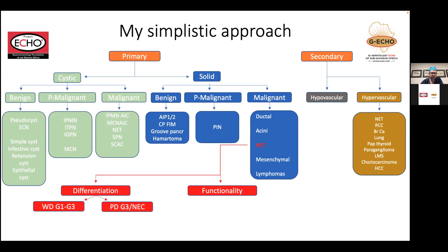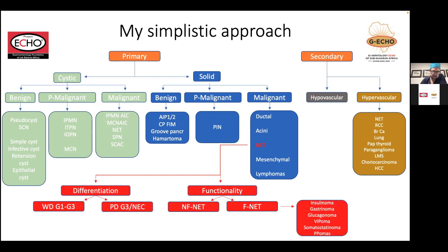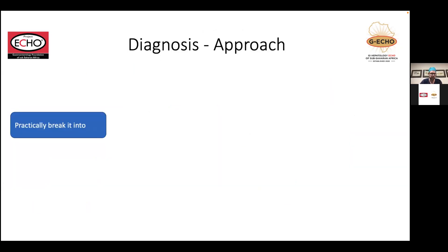The neuroendocrine tumor component can be further classified based on differentiation or functionality. Based on KI-67 or the mitotic index, we classify them as well differentiated — grade 1 to grade 3 — or poorly differentiated grade 3, i.e., neuroendocrine carcinomas. Functionally, we subclassify them as non-functional or functional neuroendocrine tumors, with the functional ones depending on the underlying amine or peptide secreted. The two common ones are insulinomas and gastrinomas.